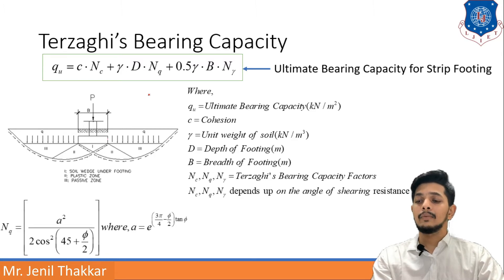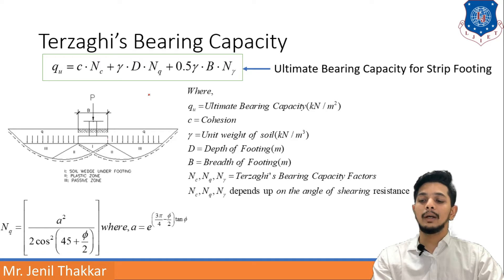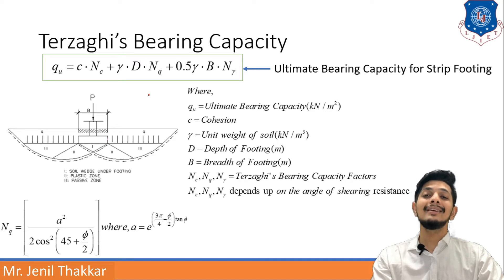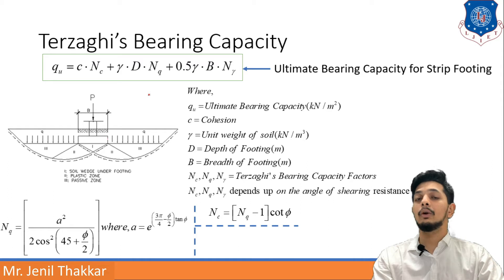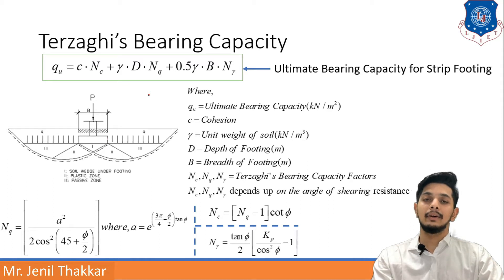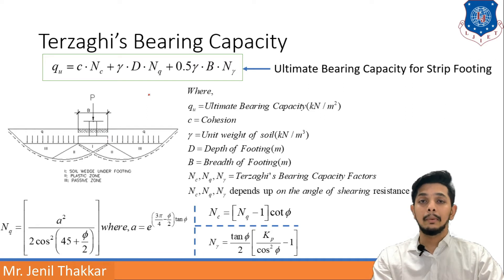The bearing capacity factor equations are: N_Q = A² / (2·cos²(45 + φ/2)), where A = e^((3π/4 − φ/2)·tan φ). N_C = (N_Q − 1)·cot φ. N_γ = (tan φ / 2)·(K_p / cos²φ − 1). These are the formulas given by Terzaghi. You must remember these formulas to understand numerical problems very well.